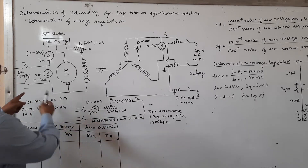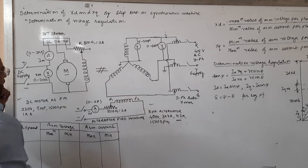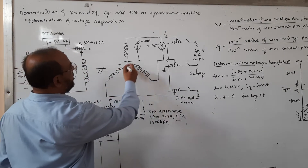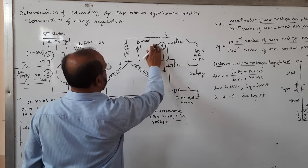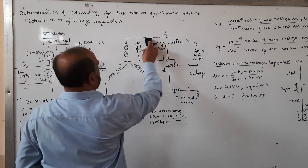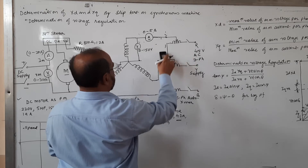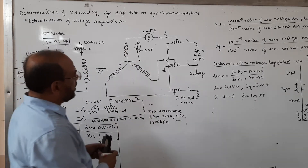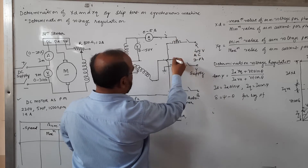This is the practical setup circuit diagram. This is the DC shunt motor acting as a prime mover. The field winding is connected with a rheostat to adjust the speed required by the slip test. This is our synchronous machine, star connected. A voltmeter is connected measuring up to 150 volts per phase, and an ammeter measuring up to 0 to 5 amperes per phase. A three-phase auto transformer is connected between the voltage supply and the machine, with the variable output terminal as the outgoing terminal.